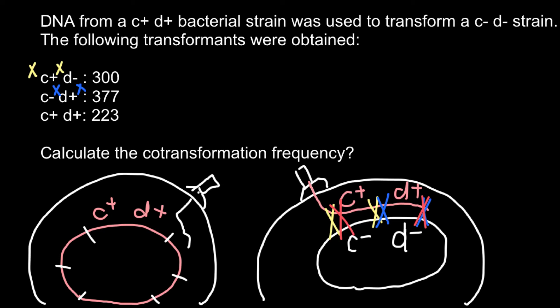And in the last variant, we see that crossing over happened here and here. And both genes have been incorporated into the genome of the host bacteria. This is what we call co-transformation when two genes have been incorporated into the host genome of the bacteria simultaneously. So how can we calculate the frequency of such an event? This is very easy.